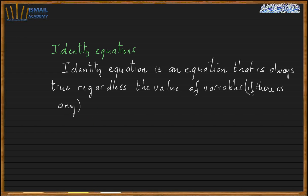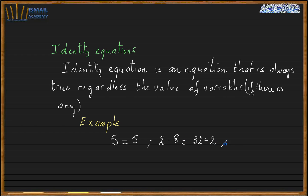Let me give an example of an identity equation. A simple example: 5 equals 5 — this is always true, this is an identity. 2 times 8 equals 32 divided by 2 — this is always true. 0 equals 0 — this is always true. x minus 3 equals x minus 3 — always true. 1000 minus 3 equals 1000 minus 3 — it's the same thing.